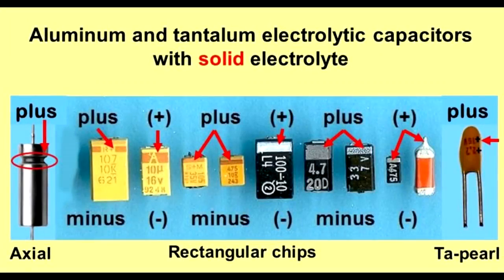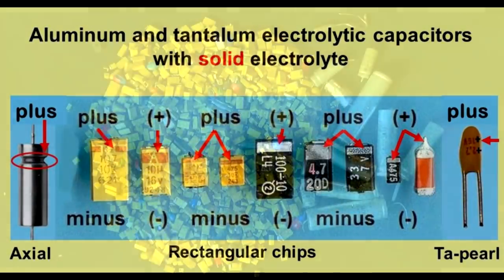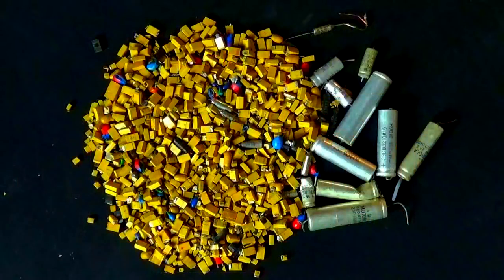This is a picture that shows the common types of Tantalum. I have seen a few more different types and I will show you next. This is my pile of Tantalum that I have collected. I have over 7 ounces in this pile and have many more boards that I will be stripping in my spare time.